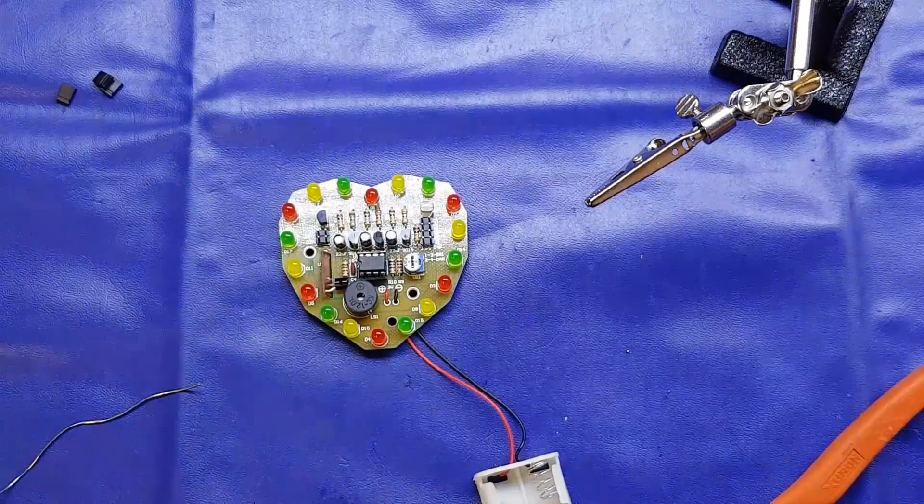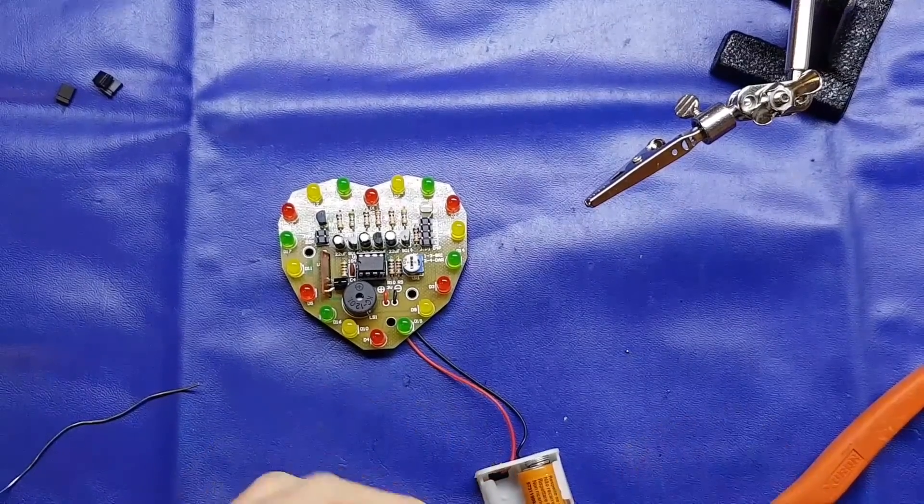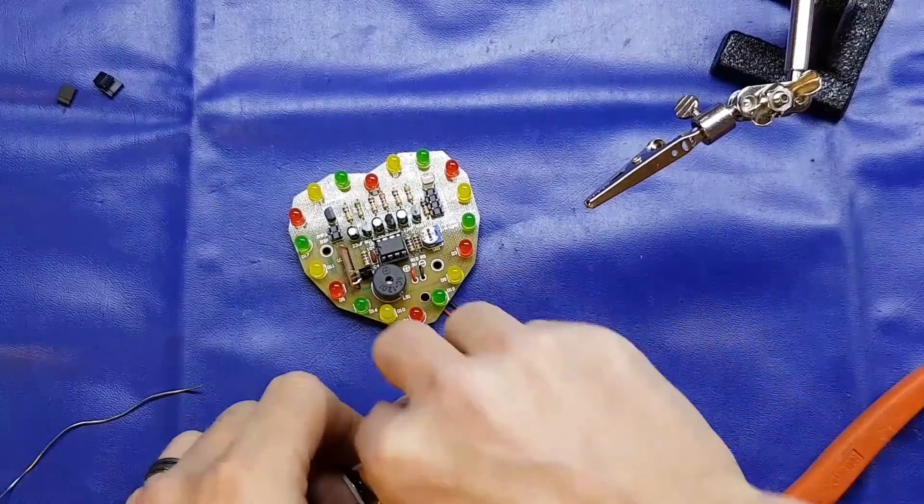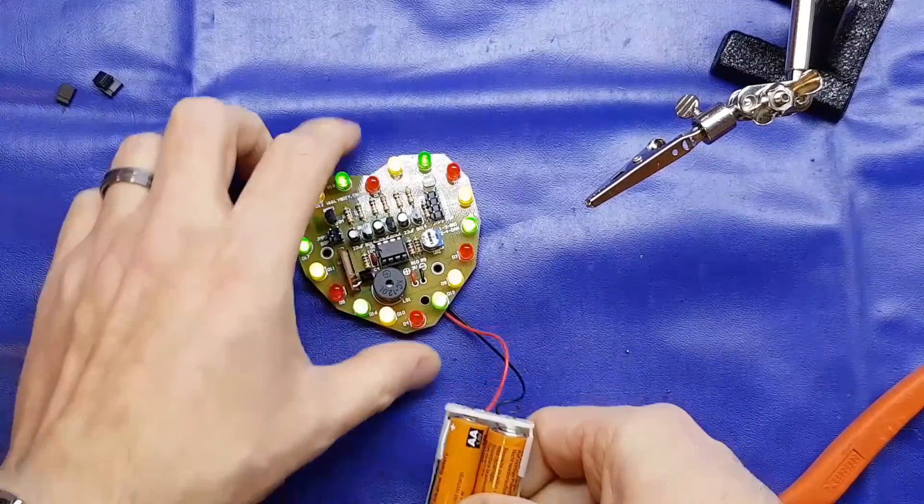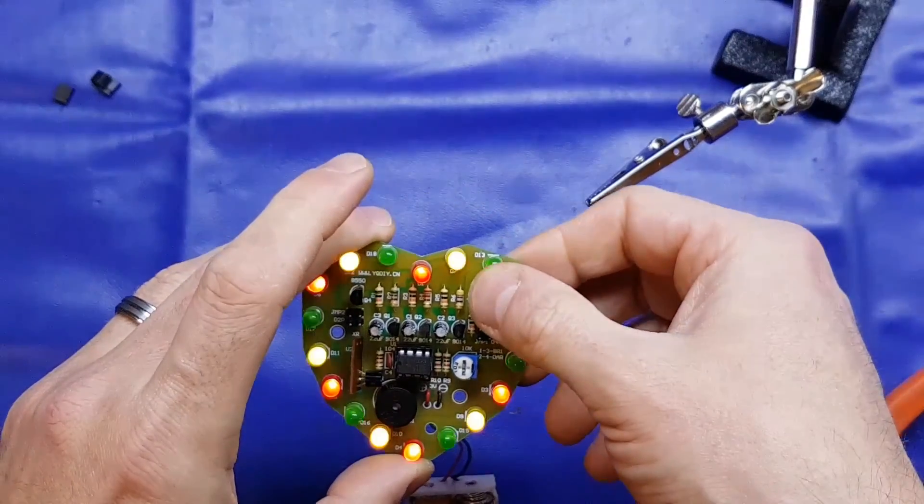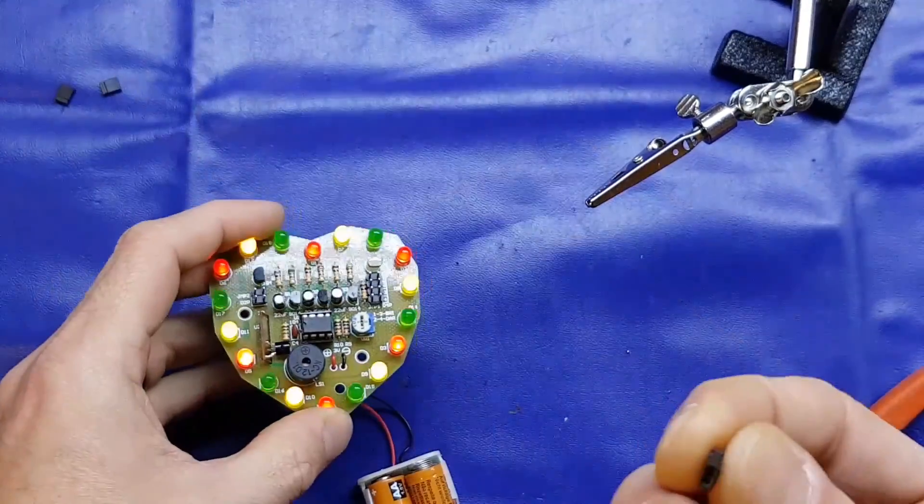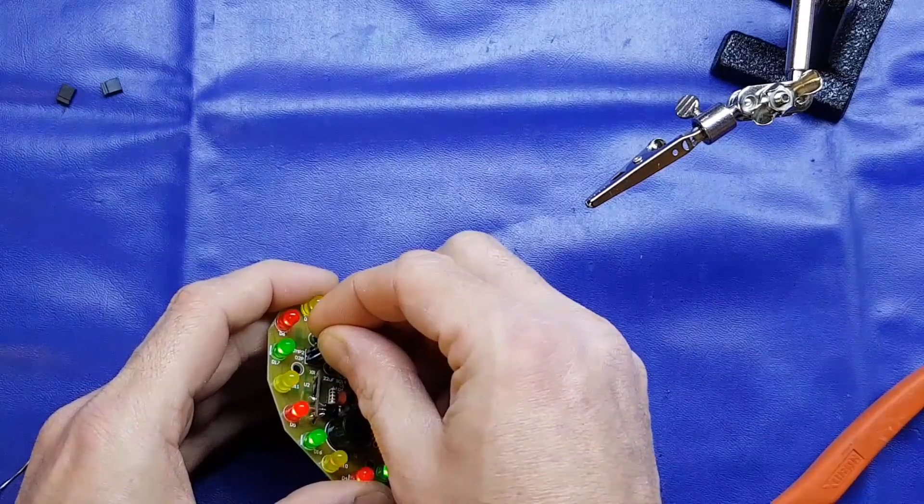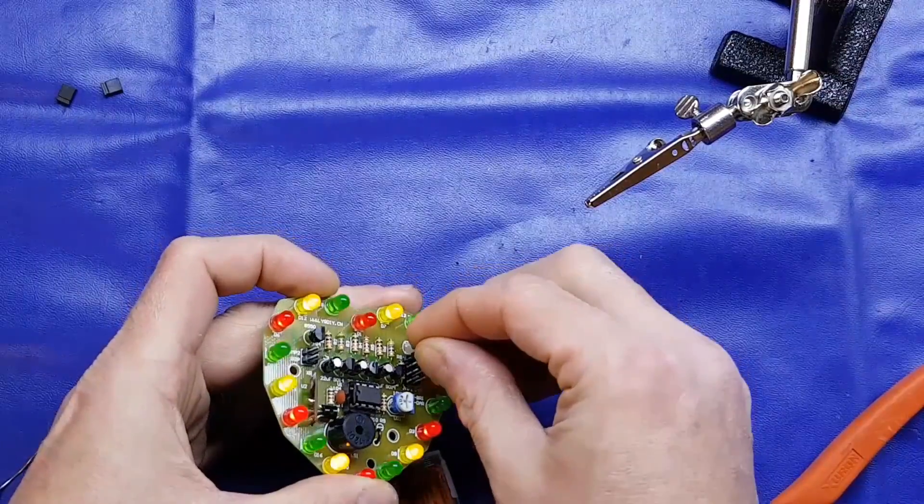So what we'll do is we'll power it up without any jumpers on and see what it does, if anything. This isn't the best quality battery holder as you can probably see. So it initially did flash, oh there we go, so we are getting a flashing heart. See if the LDR is doing anything just now, doesn't appear to be. So we'll put the jumpers on, first of all we'll see what it sounds like. So we're getting happy birthday. Right, let's join the first two, see if that does anything.